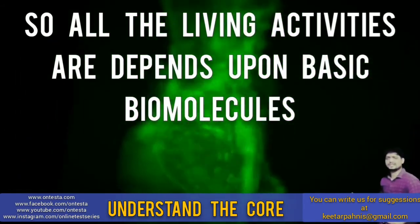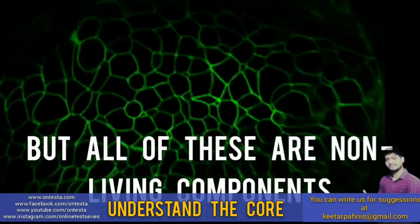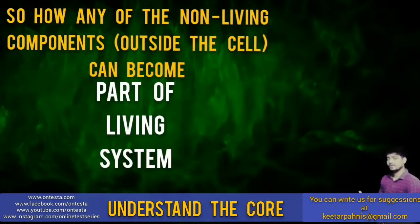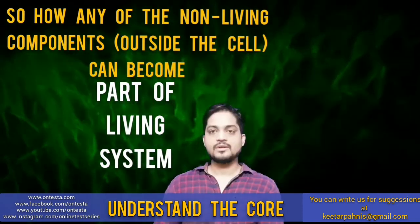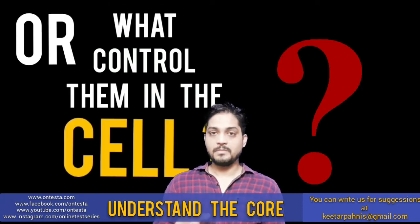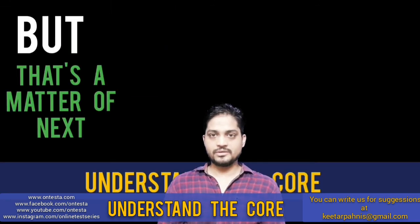So all the living activity depends upon the basic biomolecules: carbohydrates, proteins and fatty acids. But all of these are non-living components. So how can any of the non-living components become part of living systems? Or what controls them in the cell? But that's a matter of next understand the core.